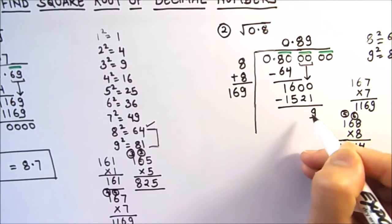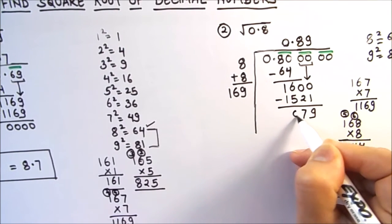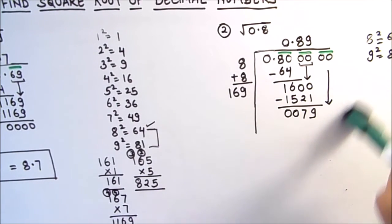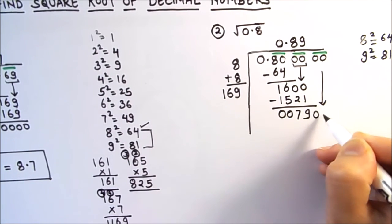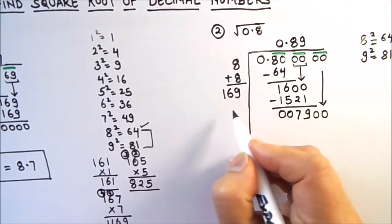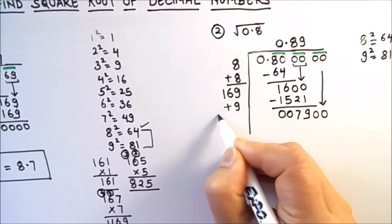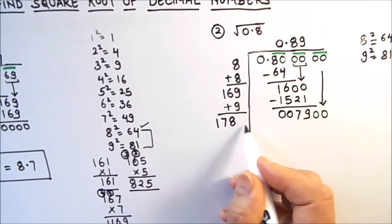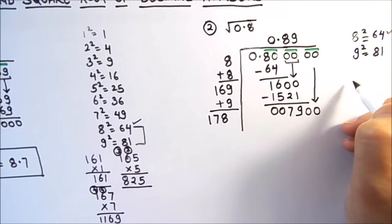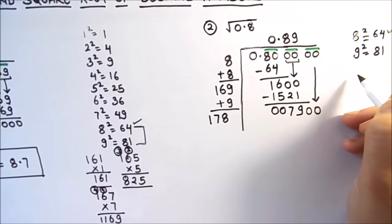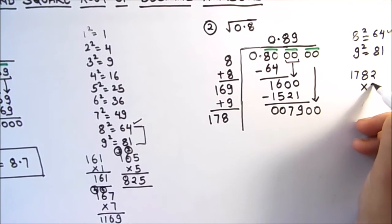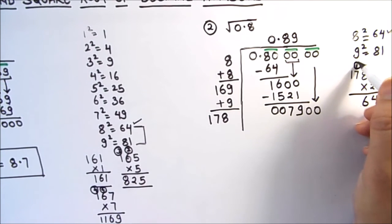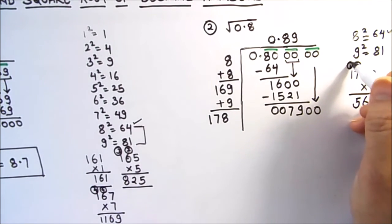We take 9 as our digit: 9 goes in the quotient and we subtract 1521. The remainder is 1600−1521=79. We drop down the next pair of zeros to get 7900. Adding 9 to the divisor gives new divisor digits of 178, and we annex one more digit.